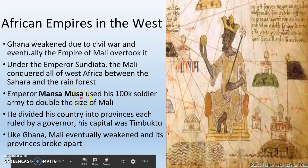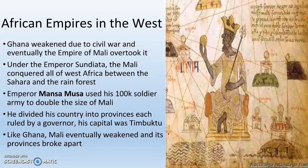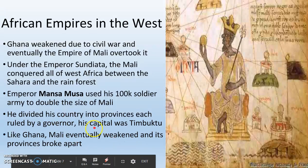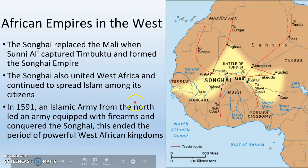Mansa Musa does convert to Islam. He's incredibly rich — by most accounts, considered to be the richest man not only in the world at the time, but to have ever lived. Like Ghana, Mali does eventually weaken, and its provinces break apart into separate kingdoms.